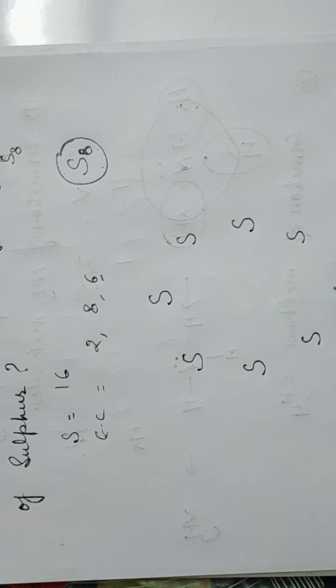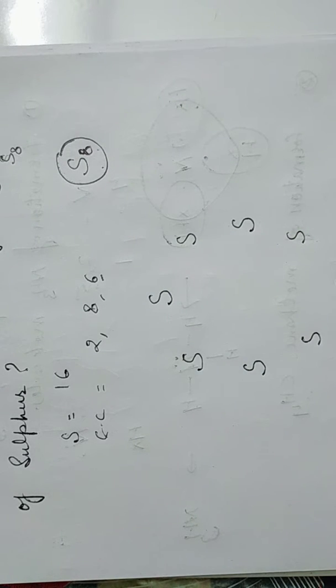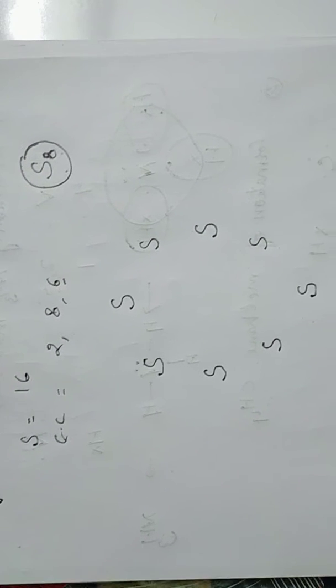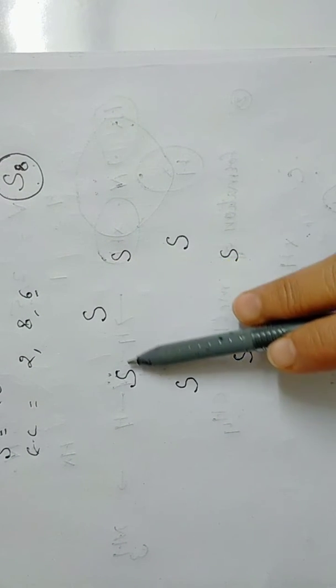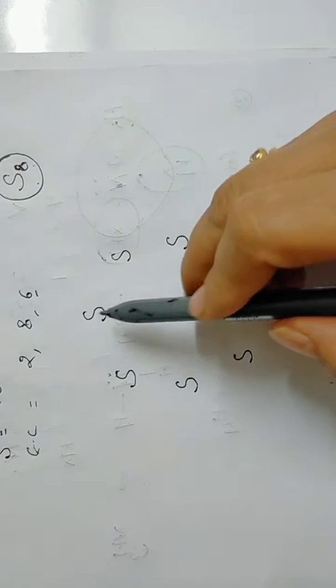Actually the S8 is a ring structure, and how the ring forms I'll explain you. First of all we will mention all eight sulfurs like this, okay, in the ring form. Now we know that each and every sulfur has six valence electrons.